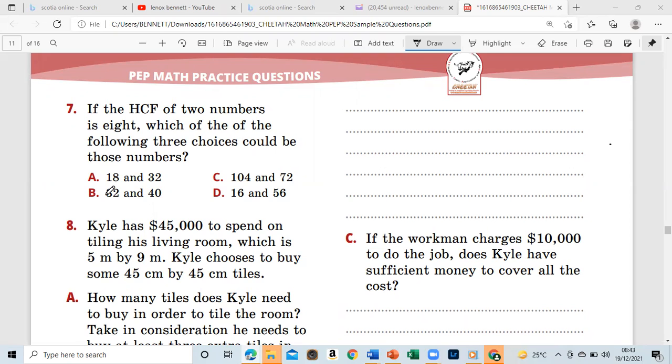Let's look at the choices. What is your choice, is it A, is it B, is it C, is it D? You guys choose. Now 18 and 32, well for one, eight cannot go into 18, so we can eliminate this.